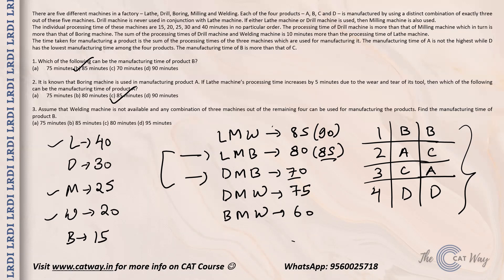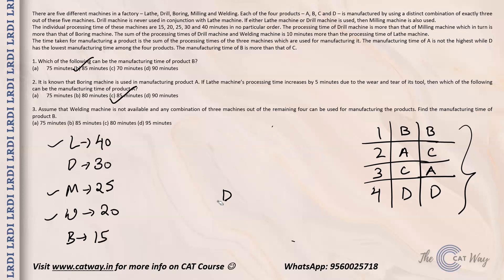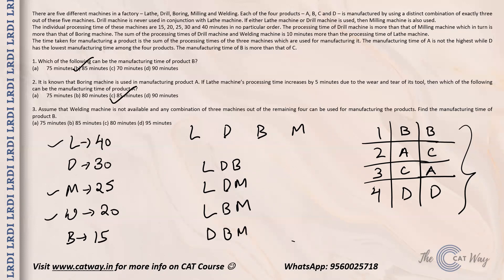Question 3: Assume the welding machine is not available, and any combination of three machines from the remaining four (L, D, B, M) can be used. Since W is removed and any combination is now allowed, the four possible combinations are: L,D,B; L,D,M; L,B,M; and D,B,M.